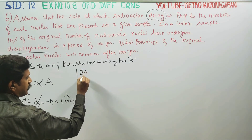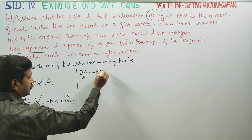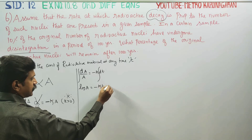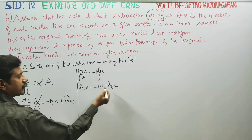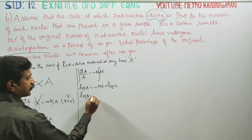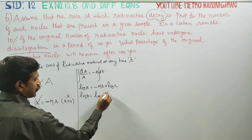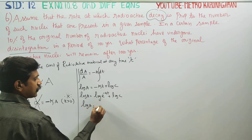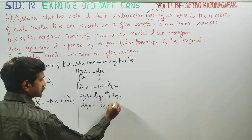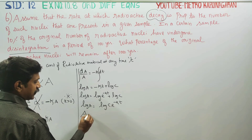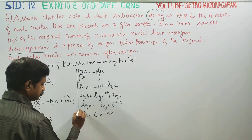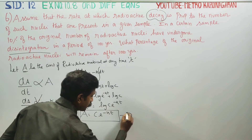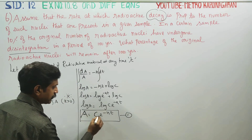It's a simple variable separable method. Rearranging: dA/A is equal to minus k dt. Integrating both sides: log A equals minus kt plus log C, where C is the integration constant. This simplifies to log A equals log(C·e^(minus kt)), giving us A is equal to C·e^(minus kt). This is the main equation, equation number one.